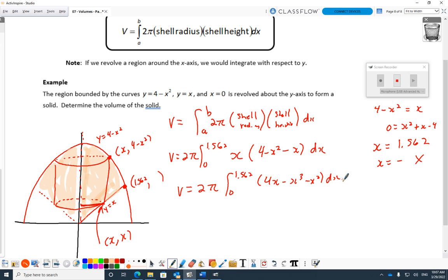So I get volume equals 2 pi, antiderivative: 2X squared minus 1 quarter X to the fourth minus third X cubed, and I got to sub in. I don't care about the zero again, but I got to put in the 1.562. I get a volume of around 13.327, depending on how many decimal places you use.